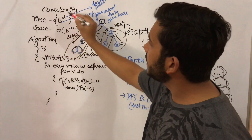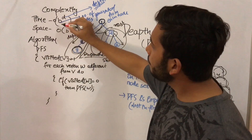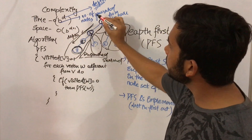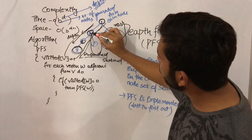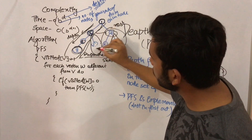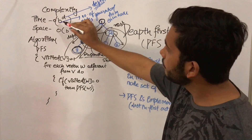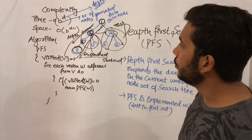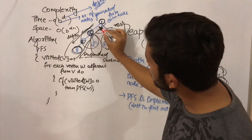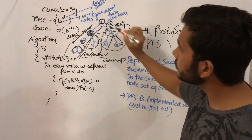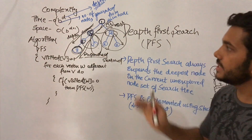The time complexity of depth first search is O(b^d), where b is the number of nodes generated from each node — for example, if 2 nodes are generated from one node, b equals 2 — and d is the depth. In this case the depth is 4.